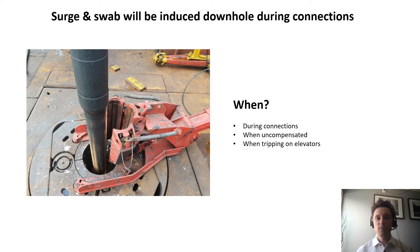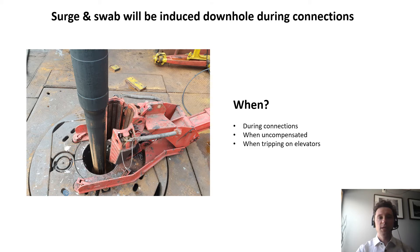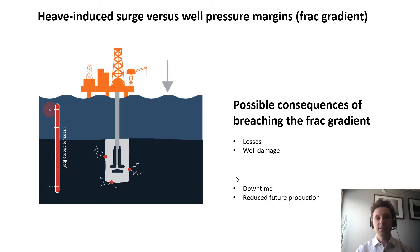To understand the consequences of inducing surge and swab downhole, we need to relate surge and swab to the margins or to the envelope. The first margin is the upper pressure limit in the well — the frac gradient.